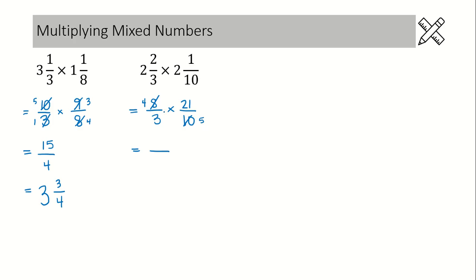21 and 3, they can both be divided by 3. 3 divided by 3 is 1, and 21 divided by 3 is 7.